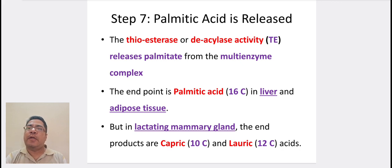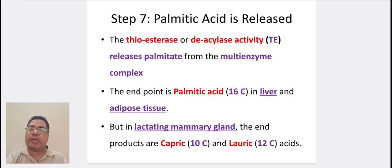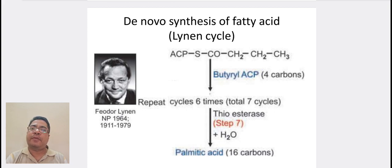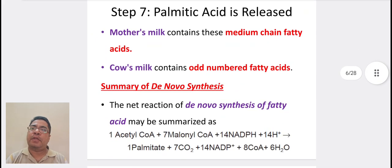Coming to step 7, palmitic acid is released. The thioesterase or deacylase activity releases palmitate from the multi-enzyme complex. The end product is palmitic acid in liver and adipose tissue, but in lactating mammary glands, the end products are capric acid and caproic acid. In this diagram, we can see Feodor Lynen, who discovered de novo synthesis of fatty acids. In this, butyryl ACP undergoes 7 cycles to finally obtain palmitic acid in the presence of enzyme thioesterase.